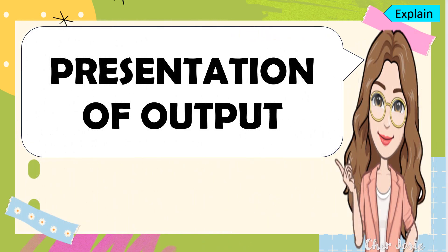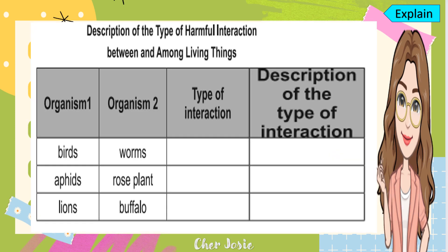Now it's time for you to present your output. All of your answers in the group activity are correct. Let's summarize them. For number one, birds and worms: birds are the predators and worms are the prey. So the type of interaction is predation. The description is one was benefited and the other was harmed or killed.